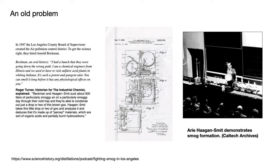He explained: 'I'm a chemical engineer from Illinois and we used to have to visit sulfuric acid plants in Whiting, Indiana. Such a potent and pungent odor comes from sulfur — you can smell it long before it has any physiological effects on you.' So the nose is really an underappreciated instrument for studying complex chemical mixtures. To learn more, Beckman and Caltech hired a natural product chemist, Ari Hagensmit, who would go on to become the first chairman of California's Air Resources Board.